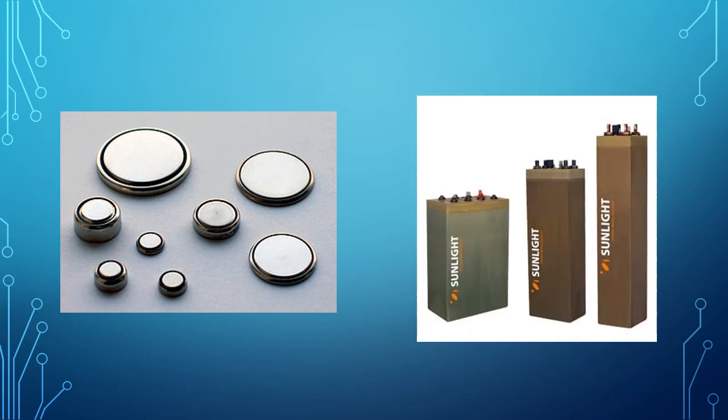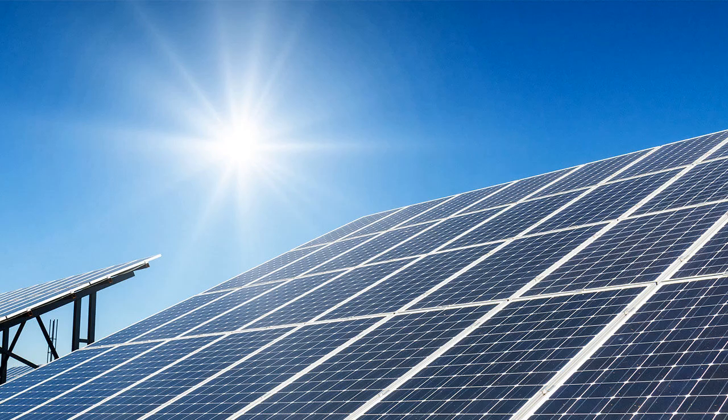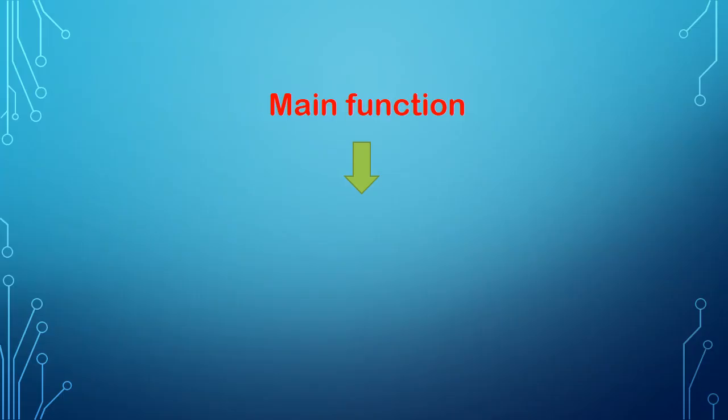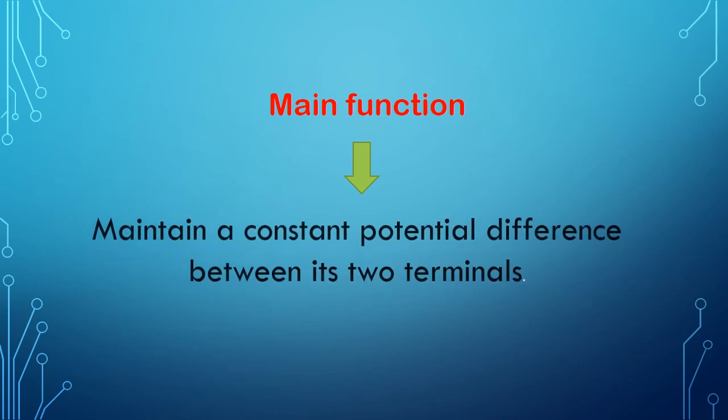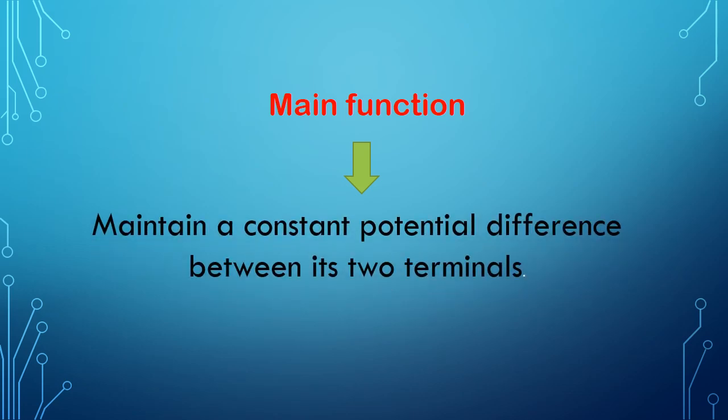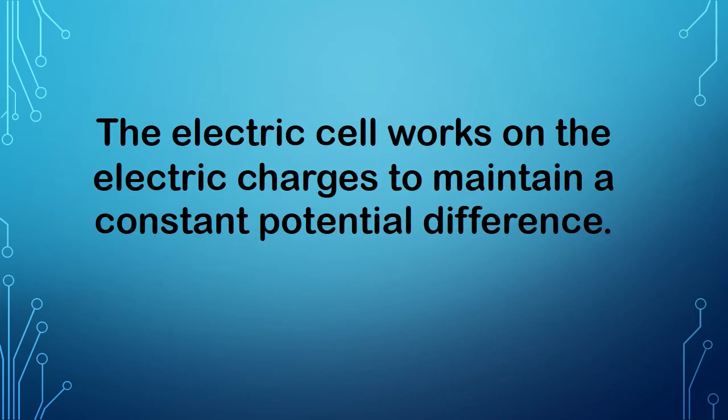Out of this, you must be aware of solar cells. The main function of various electric cells is to maintain a constant potential difference between its two terminals. The electric cell works on the electric charges to maintain a constant potential difference.